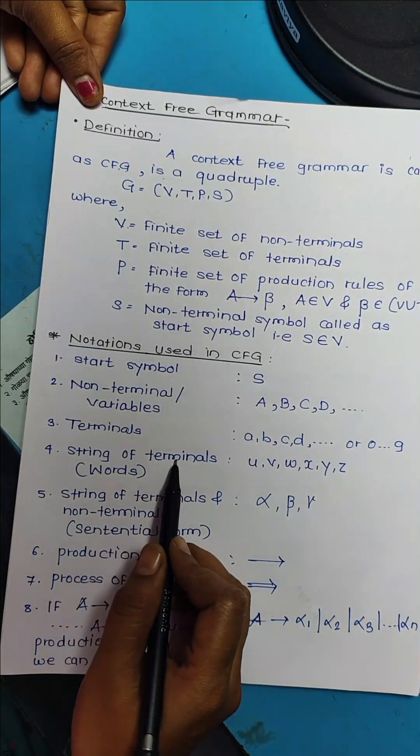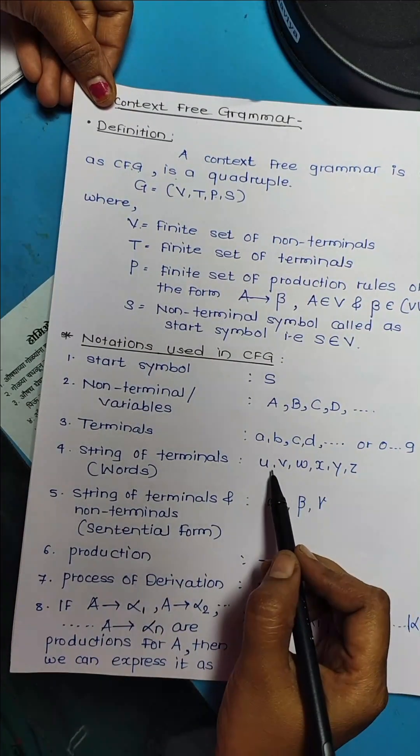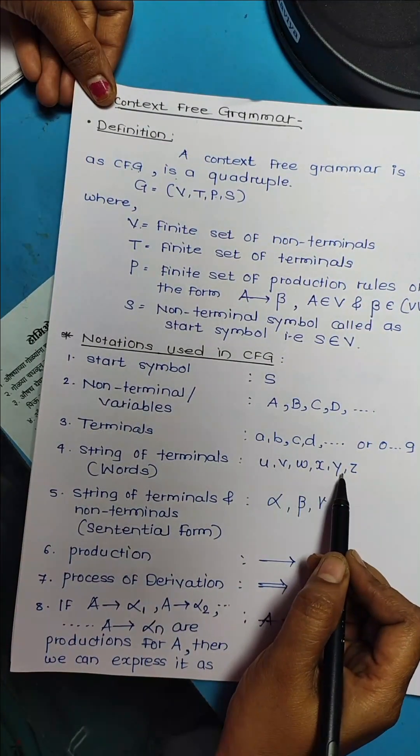The string of terminals is also known as words, which are represented using U, V, W, X, Y, and Z.